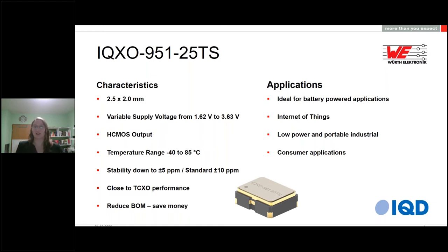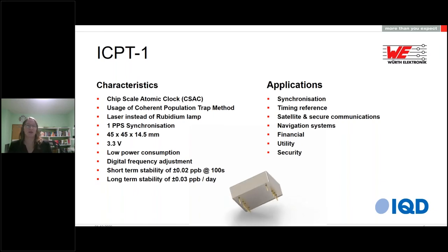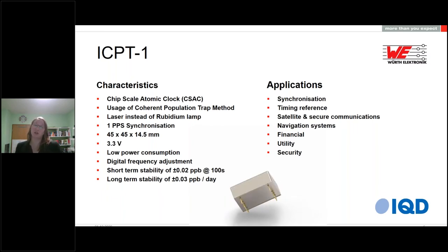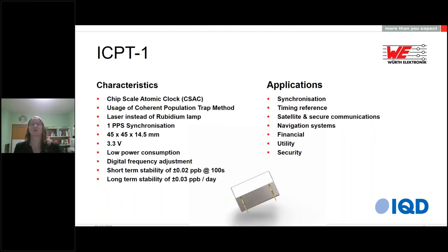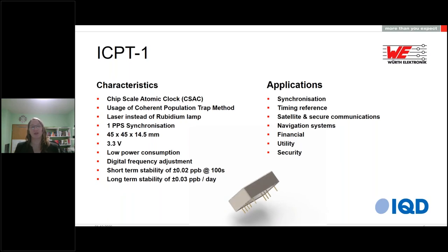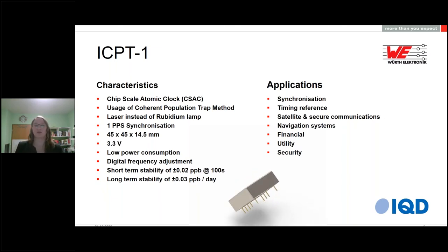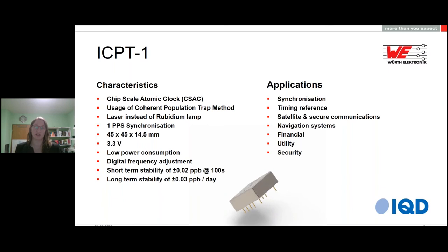The applications remain the same — all kinds of battery-powered devices. Last but not least, I want to introduce our newest addition to the rubidium and atomic clock lineup: the ICP-T1. This is currently only available at IQD and is in chip scale atomic clock size — pretty small at 45 by 45 by 14.5 millimeters, which is indeed quite small for an atomic clock. It uses the coherent population trap method, a different way to excite the atoms internally, and comes with only 3.3 volts, making it low in power consumption for an atomic clock.